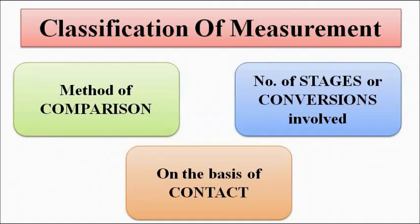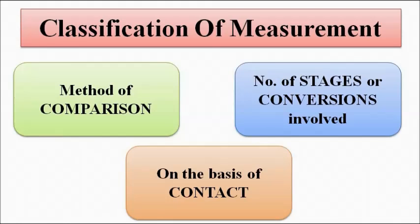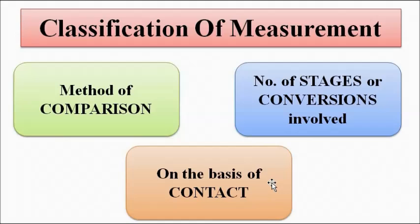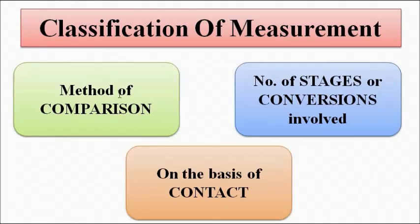The number of such stages or conversions also forms one category of measurement. Then, on the basis of contact — whether the apparatus or instrument is touching the signal variable or not — we can also categorize measurement. We will discuss them one by one in this video.